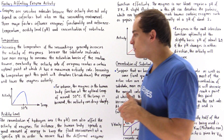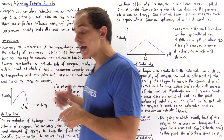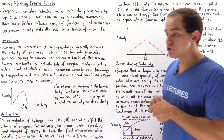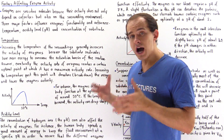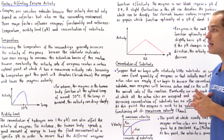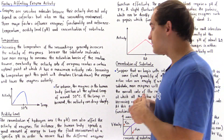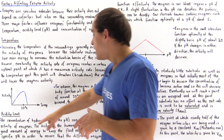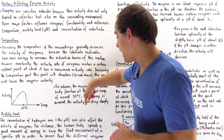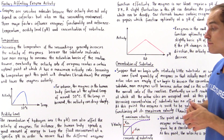Now let's move on to acidity level. How exactly does the pH — the concentration of hydrogen ions — affect the functionality and activity of our enzymes? The concentration of hydrogen ions, the pH, can also affect the activity of enzymes.